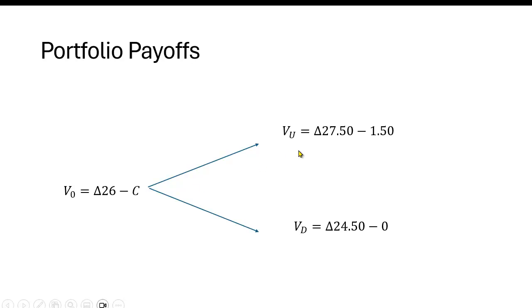In the upstate of the world, it's delta times $27.50 minus the $1.50 value of the call. In the downstate, it's delta $24.50 minus the value of the call, which is zero. Remember, these are the two prices.